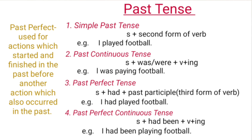And example is 'I was playing football.' Past perfect tense is used for actions which started and finished in the past before another action which also occurred in the past. It is formed of Subject plus 'had' plus past participle, which is the third form of the verb.